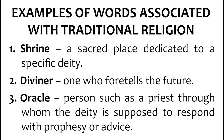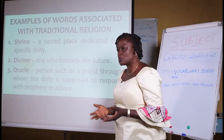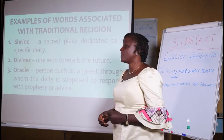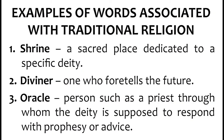Number one: shrine. A shrine is a sacred place dedicated to a specific deity. For those of us used to watching African or Nigerian movies, you often see a shrine where a chief priest performs fetish practices. Number two: diviner. A diviner is one who foretells the future. Number three: oracle. A person such as a priest through whom the deity is supposed to respond with prophecy or advice — the deity passes messages to the people through the oracle.